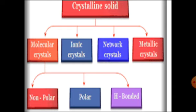Before starting the topic, let us study something about the nature of the bond. As you all know, the main ingredient to prepare food is common salt. Without salt the food won't be tasty. Common salt has an ionic bond; such compounds are called ionic compounds. They have a sharp melting point and a shining appearance. Such crystals are called ionic crystals.